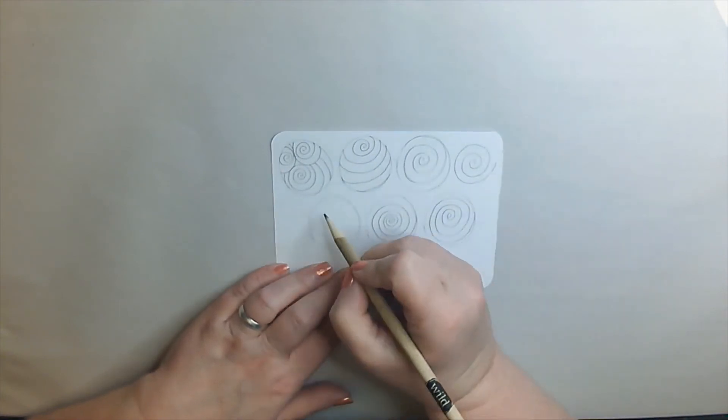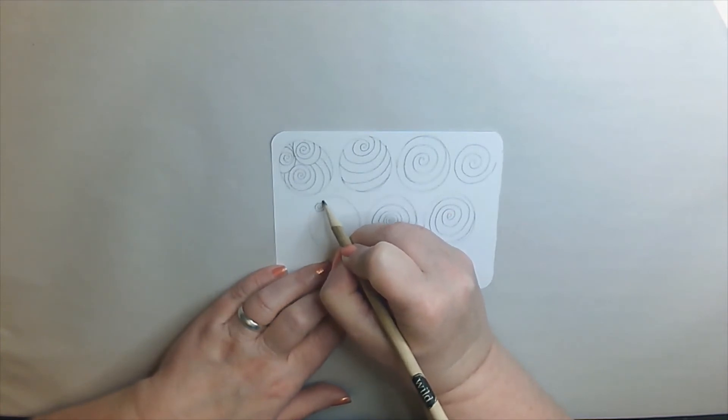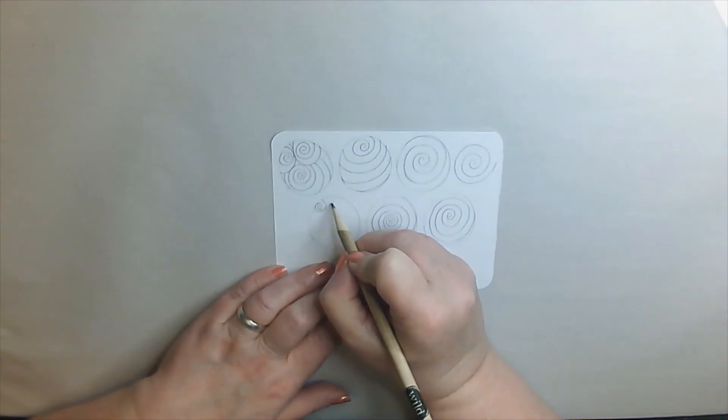Then for our last little circle, we're just going to do little swirlies. There's one. Then right next to it, we're going to start another one.